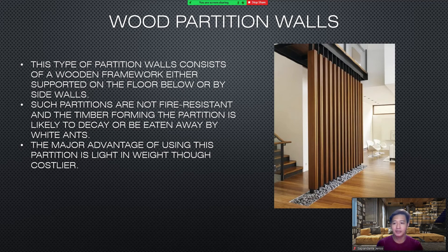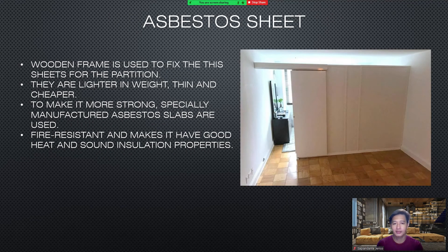Wood partition walls consist of a wooden framework, either supported on the floor below or by side walls. Such partitions are not fire-resistant and the timber forming the partition is likely to decay or be eaten away by white ants. The major advantage of using this partition is that it is light in weight, though costlier. Asbestos sheet: a wooden frame is used to fix these sheets for the partitions. They are lighter in weight, thin, and cheaper. To make them more strong, specially manufactured asbestos slabs are used. They are fire-resistant and have good heat and sound insulation properties.